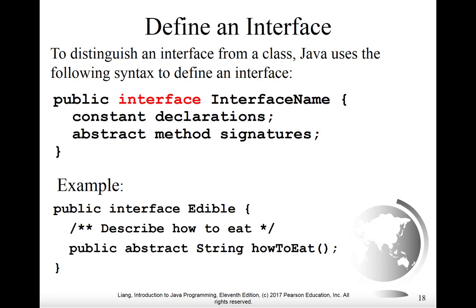Next we'll discuss how to define an interface. Since an interface is not a class, we have a separate way of declaring interfaces. You would say 'public interface' and then give the name of the interface. Then you would define in a block any constant declarations and the signatures of the abstract methods. For example, the toy example of Edible is captured by saying 'public interface Edible', and then there is an abstract method called 'how to eat'.